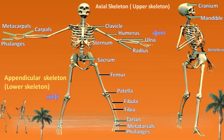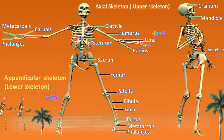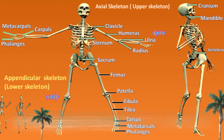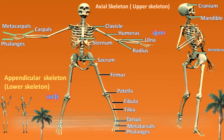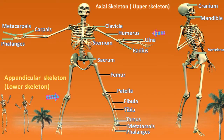Now there are 206 bones that make up the skeleton system, and sometimes we can end up having 207 bones. Now the skeleton system is divided into two parts, two skeletons. The first one is known as the axial skeleton, which is the upper part of the skeleton system. Then we have the appendicular skeleton, which is the lower part of the skeleton system. Now let's start off with the axial skeleton.